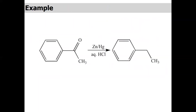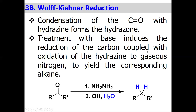In the Clemmensen reduction, when you have zinc amalgam in HCl, you can convert the carbonyl compound to CH2. In the Wolf-Kishner reduction, if you have a carbonyl compound, you treat it with hydrazine and base. There are two steps: in the first step, the compound reacts with hydrazine to form a hydrazone. In the second step, the hydrazone reacts with base, and on removal of nitrogen, you get the corresponding alkane.